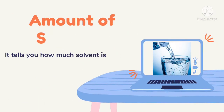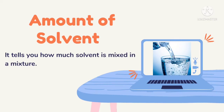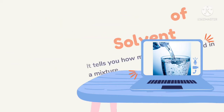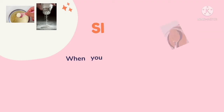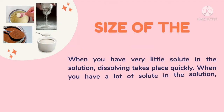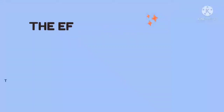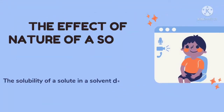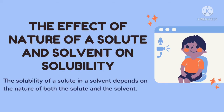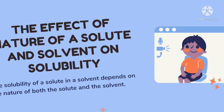Next is the amount of solvent: it tells you how much solvent is mixed in a mixture. And the last one is size of the solute. When you have very little solute in the solution, dissolving takes place quickly. When you have a lot of solute in the solution, dissolving takes place more slowly. In this case, the solubility of a solute in a solvent depends on the nature of both the solute and the solvent.